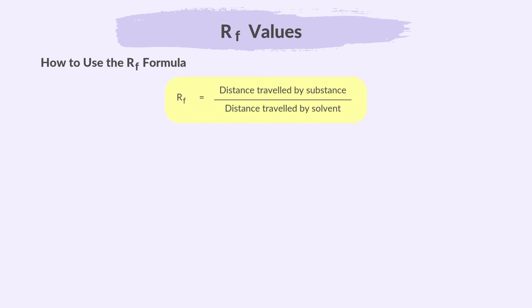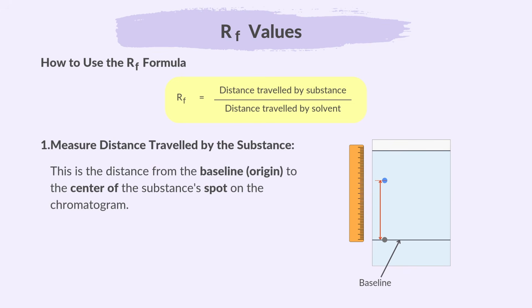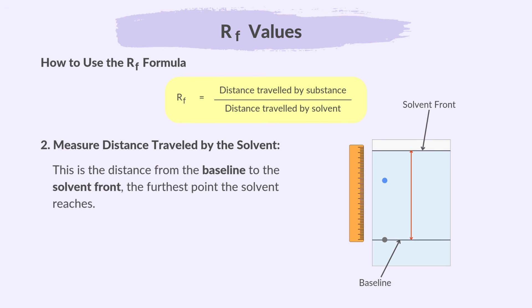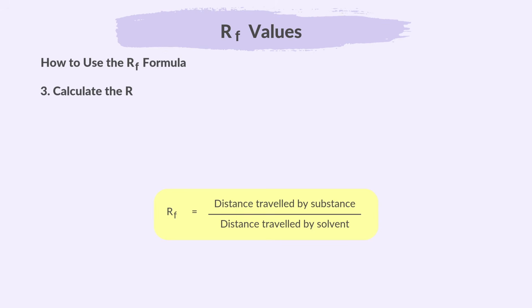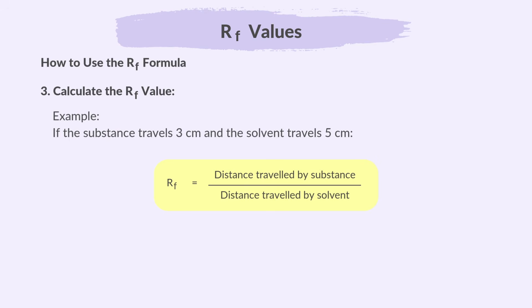To use the RF formula: first, measure the distance travelled by the substance — from the baseline (the origin) to the centre of the substance's spot on the chromatogram. Next, measure the distance travelled by the solvent — from the baseline to the solvent front, the furthest point the solvent reaches. Then calculate the RF value by dividing the distance travelled by the substance by the distance travelled by the solvent. The RF value is always between 0 and 1. For example, if the substance travels 3 centimetres and the solvent travels 5 centimetres, RF equals 3 divided by 5, which is 0.6.